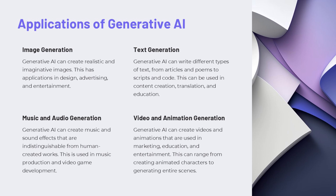Generative AI has a wide range of applications across different industries. One key application is image generation — using AI to create realistic and imaginative images for design, advertising, and entertainment. Another application is text generation, where AI can write articles, poems, scripts, and code, useful for content creation, translation, and education. Generative AI can also create music and audio indistinguishable from human-created works, with applications in music production and video game development. Finally, it can create videos and animations for marketing, education, and entertainment, from animated characters to entire scenes.